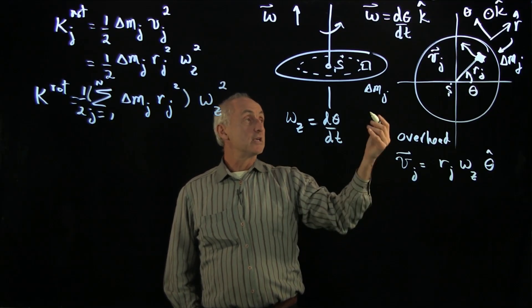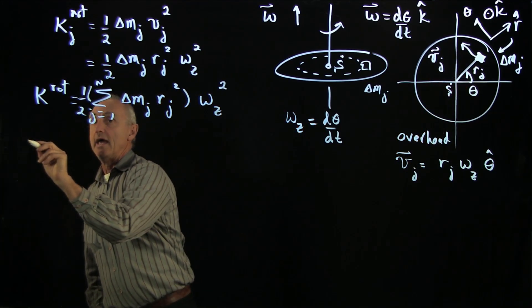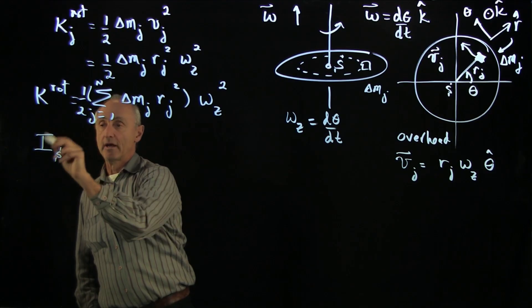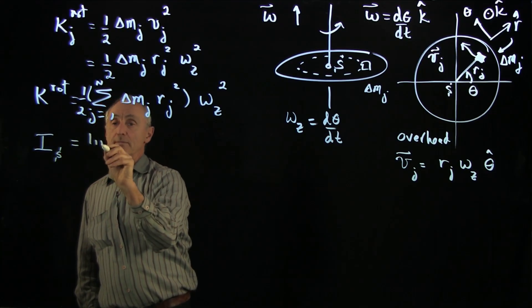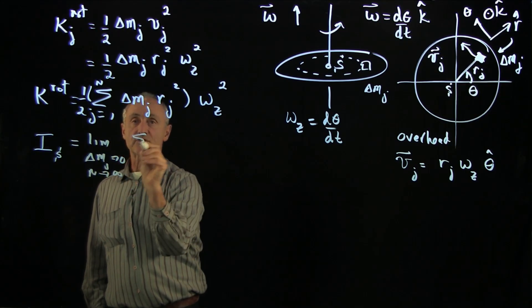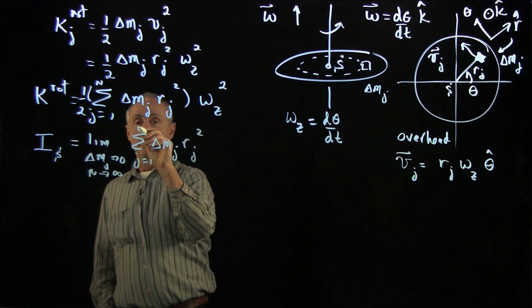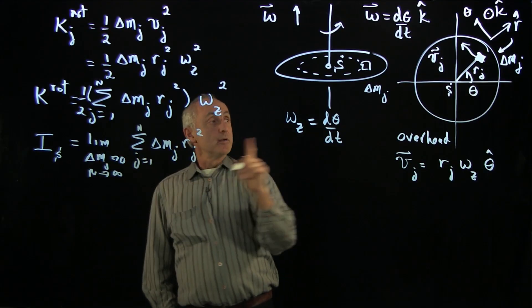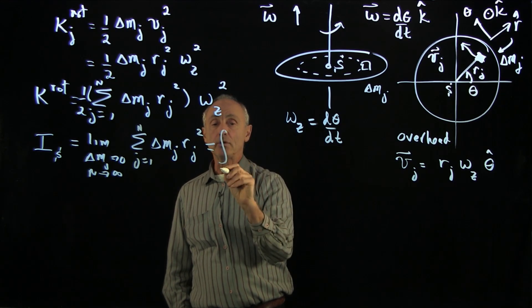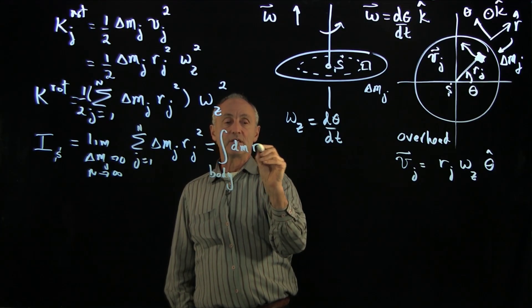Now what we want to do now is look at the limit as our delta m_j becomes very small because we have a continuous body. We'll write a definition, which is going to be the moment of inertia passing through this point s about the axis passing through s, equal to the limit as delta m_j goes to 0 or n goes to infinity of this sum: delta m_j r_j squared, j goes from 1 to n. Because this is a limit for the continuous body, we'll define it as the integral over the body of a small mass element dm times r squared.